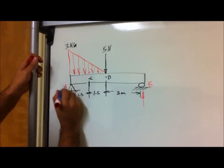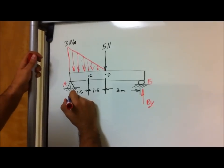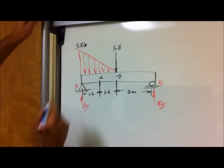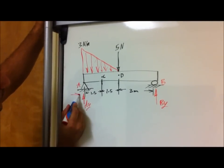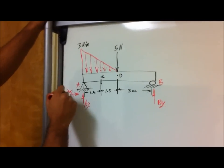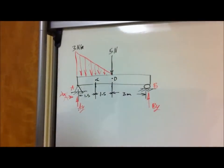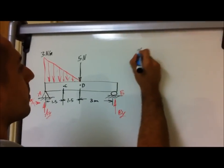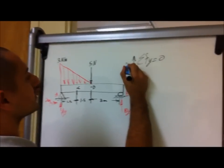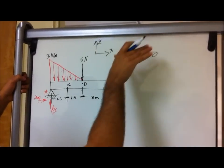Let's call this B and this A. So we have B-Y as our reaction, and then we have A-Y. This is our first main step: determining our reactions. Since this is a pin connection, we also have a force going horizontally — let's call it A-X. If we do the summation of forces in X, we find that A-X equals zero, so we don't have to include it. Anything going up is positive, anything going to the right is positive.